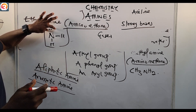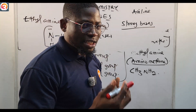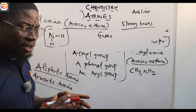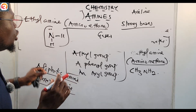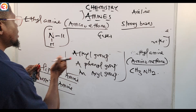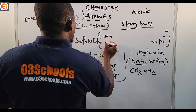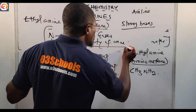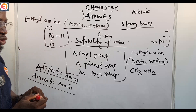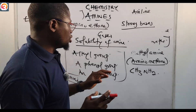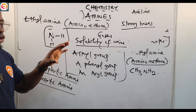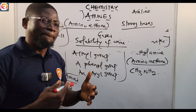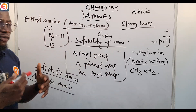Amines are strong bases. The reason amines are strong bases is that the nitrogen in the amino group (-NH₂) has a lone pair of electrons. This lone pair makes amines very strong bases, so they have the characteristics of a base — such as turning red litmus paper to blue. The solubility of amines in water is also due to their ability to form hydrogen bonds.